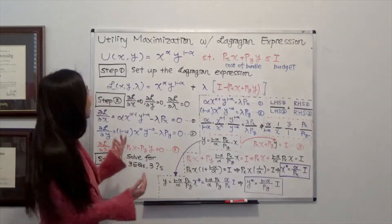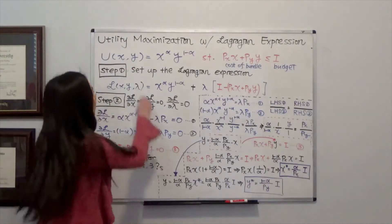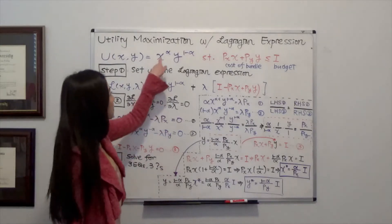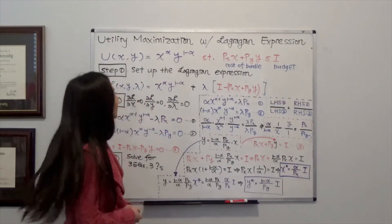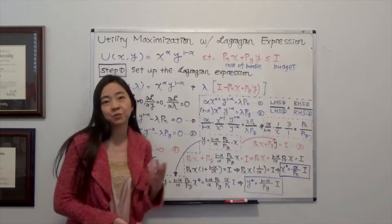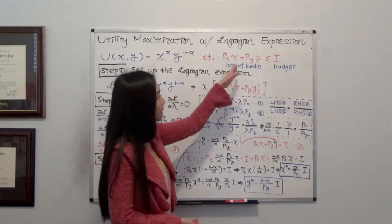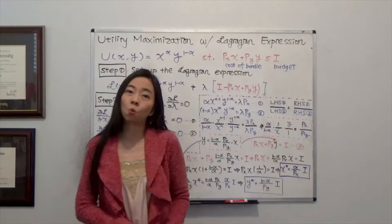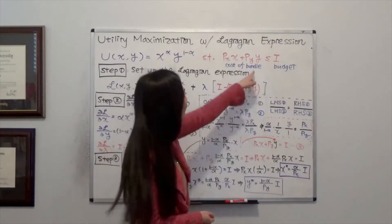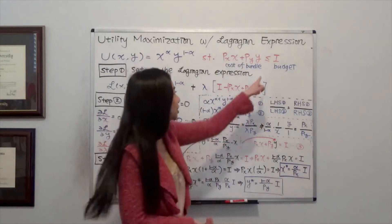Suppose we have a Cobb-Douglas utility function where u(x,y) is equal to x to the power of alpha times y to the power of 1 minus alpha, where alpha is between 0 and 1. We also have a budget constraint where the cost of the bundle p_x·x plus p_y·y must be less than or equal to your budget i.